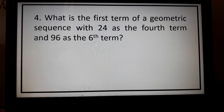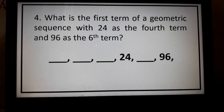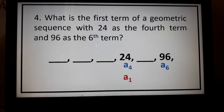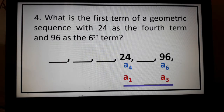Problem number 4. What is the first term of a geometric sequence with 24 as the 4th term and 96 as the 6th term? Looking at the sequence, we have 24 as our 4th term and 96 as our 6th term. Using the formula, we'll use A sub 4 as our first term, then count up to 96, which becomes A sub 3.